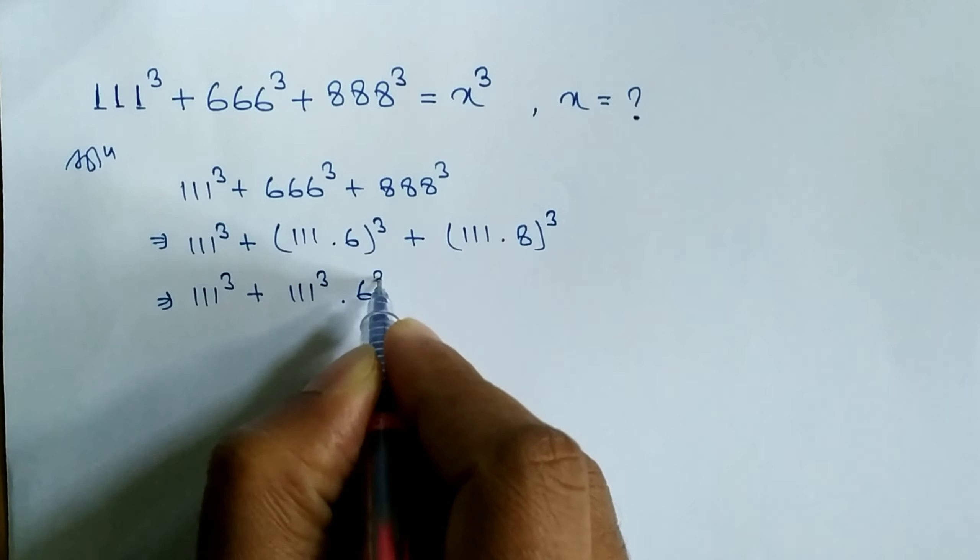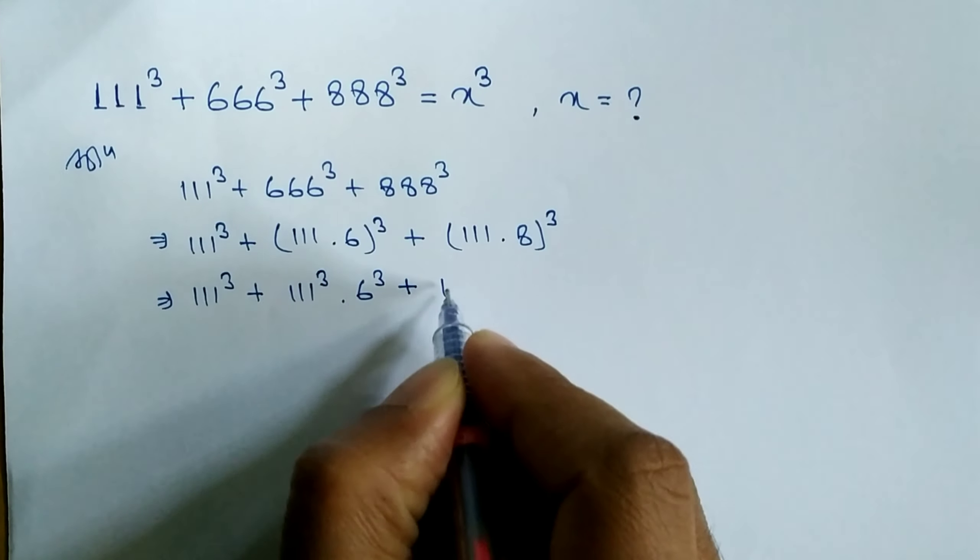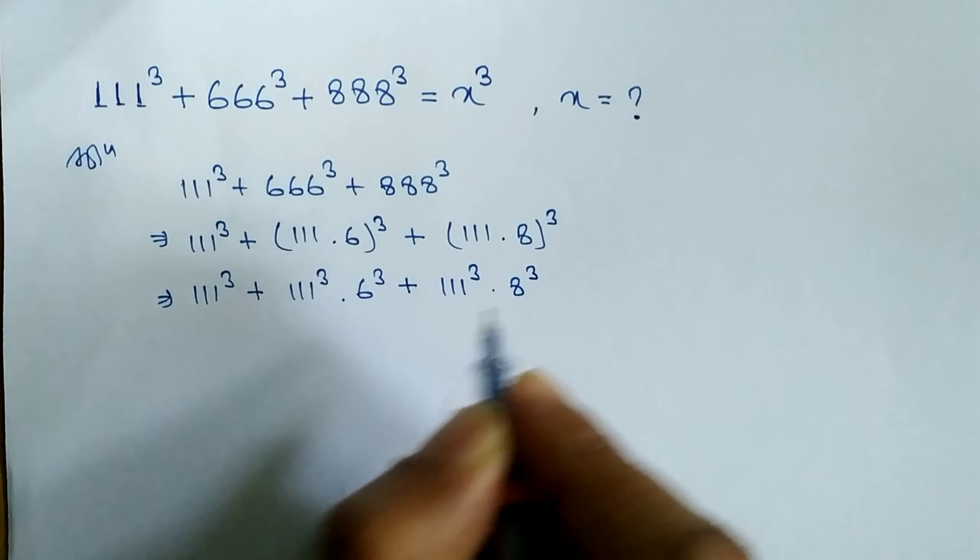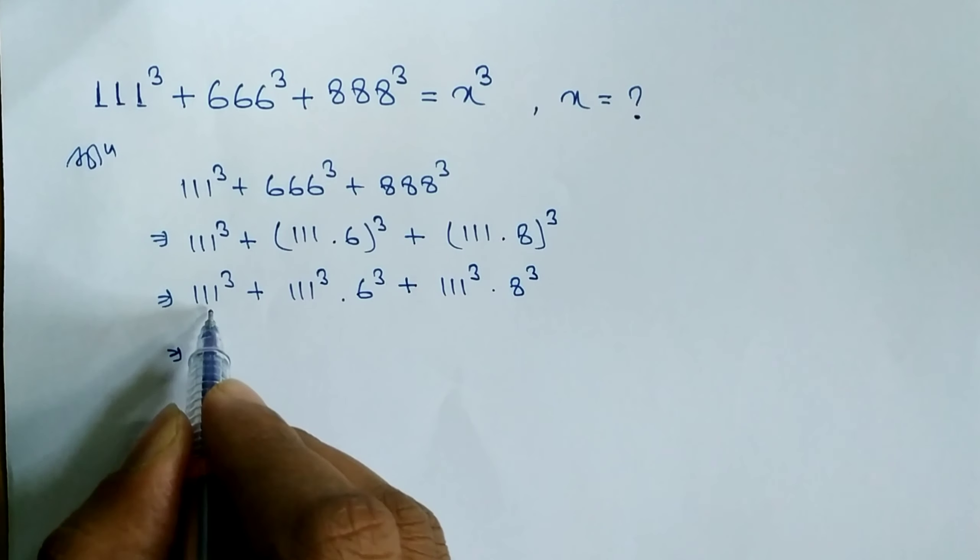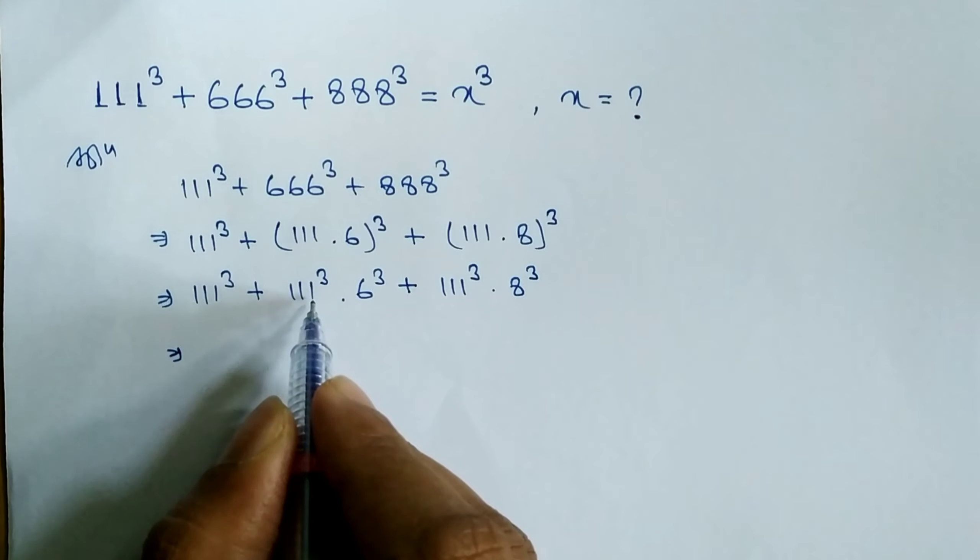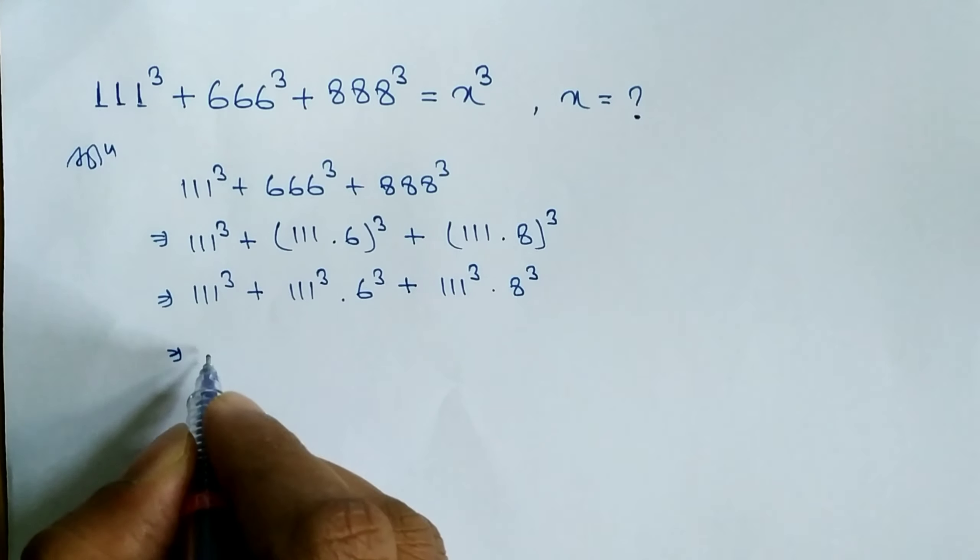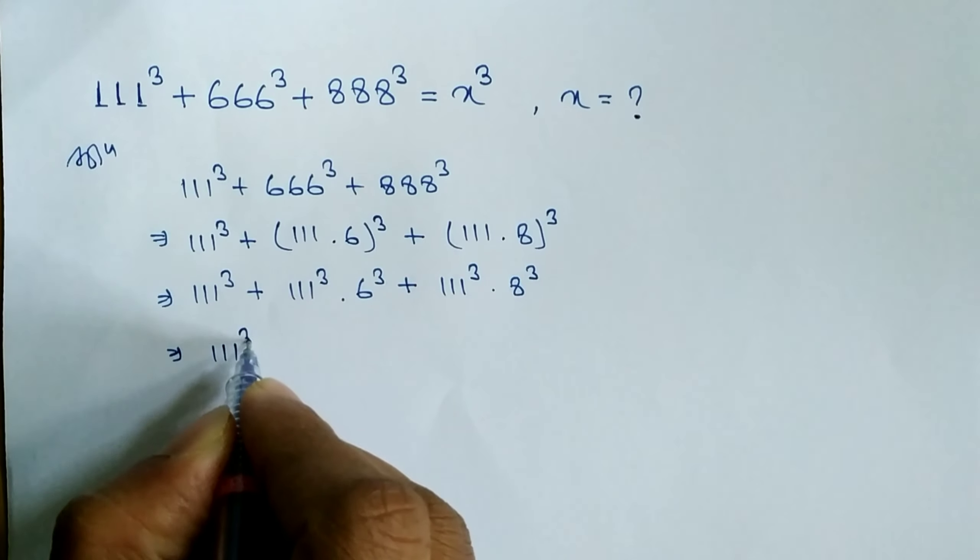Similarly, 111³ × 8³. Now you can see here 111³, here also 111³, and here also 111³. So we can take common 111³.